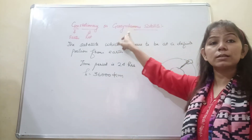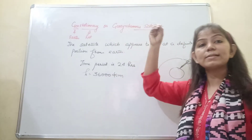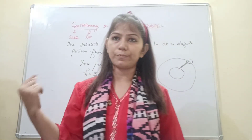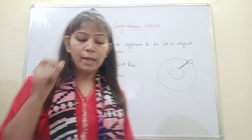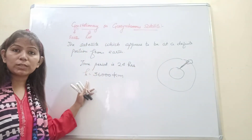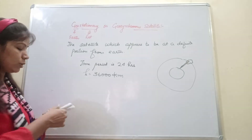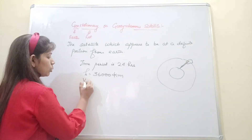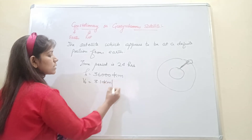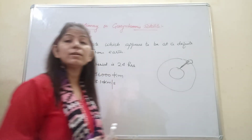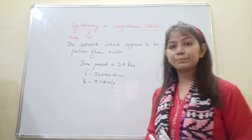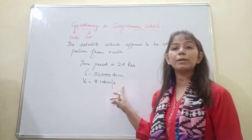In a geosynchronous orbit, the satellite stays behind the Earth in the same orbit. The orbital speed of a geostationary satellite is 3.1 km per second.